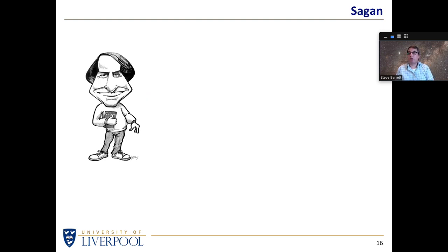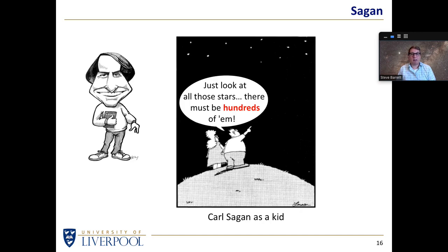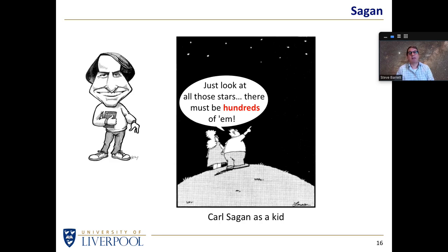This gentleman we talked about before in the extreme top left of the Hertzsprung-Russell diagram - a cartoon from his youth by Gary Larson. 'Just look at all those stars,' he says. 'There must be hundreds of them.' And for those of you who don't understand that joke, perhaps you haven't heard the way Carl Sagan narrated, especially in his series back in the 80s, Cosmos.